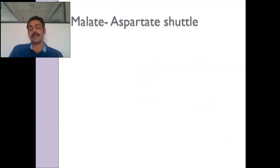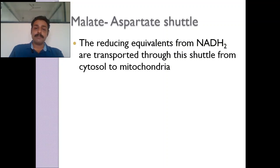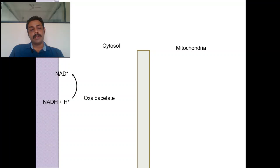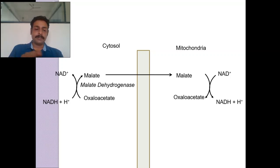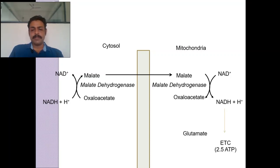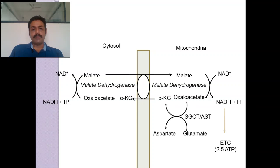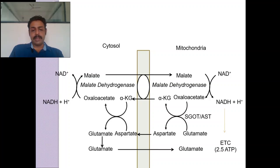The malate-aspartate shuttle does not lose any energy. Oxaloacetate becomes malate — here NADH's hydrogen is taken up into malate. This malate enters inside the mitochondria and hydrogen is liberated to become NADH inside the mitochondria. What happens to the oxaloacetate? Using SGOT (aspartate aminotransferase), it becomes alpha-ketoglutarate and aspartate. Alpha-ketoglutarate goes outside in exchange for malate. Aspartate goes inside and becomes glutamate and oxaloacetate again. Glutamate comes inside against aspartate via the antiporter.